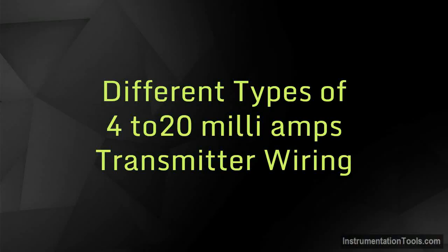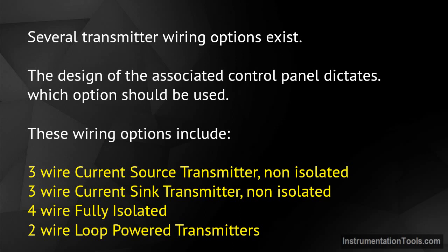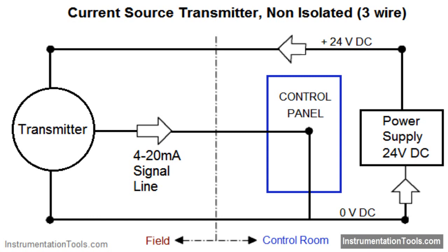Different types of 4 to 20 milliamps transmitter wiring. Several transmitter wiring options exist; the design of the associated control panel dictates which option should be used. These wiring options include: three-wire current source transmitter non-isolated, three-wire current sink transmitter non-isolated, four-wire fully isolated, and two-wire loop powered transmitters.